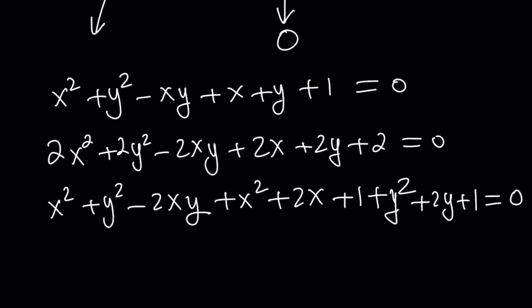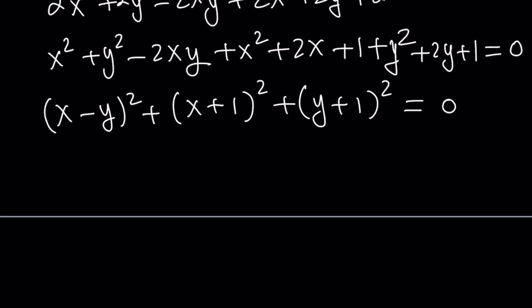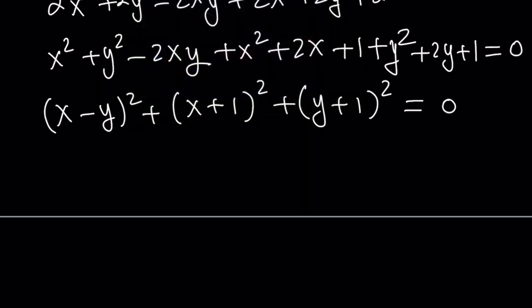Of course, this doesn't always work. If it does, it does. So, now, we have x minus y squared plus x plus 1 squared plus y plus 1 squared is equal to 0. Unless you're looking for integer solutions, you know, you have to do something special like this to get real solutions. Now, we have the sum of squares equal 0. If x and y are real, which they are, then each of these numbers have to equal 0. Otherwise, you can't get 0 by adding squares because squares cannot be negative.